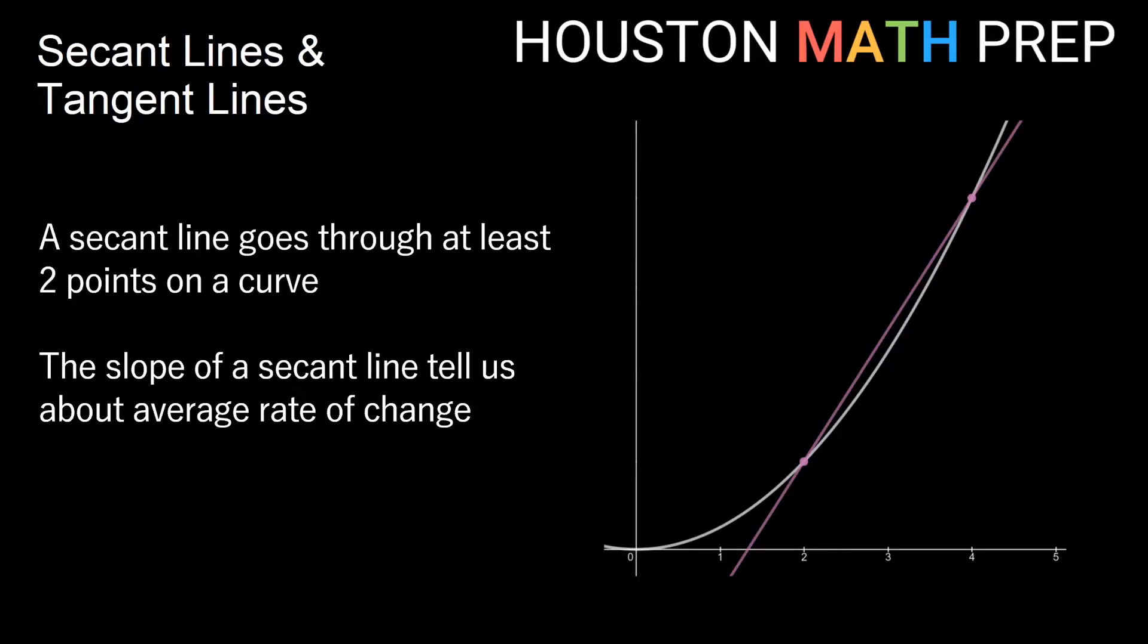Hey everyone, Houston Math Prep here. You can see I have a picture of a curve of some function and I have a line going through two different points on that function. We call this a secant line. A secant line goes through at least two points on a curve. The slope of this secant line tells us about the average rate of change between these points on our curve.